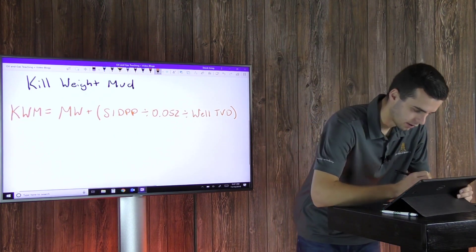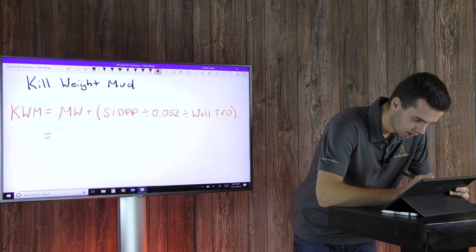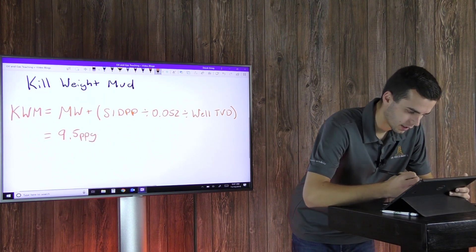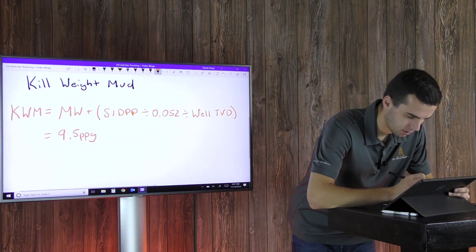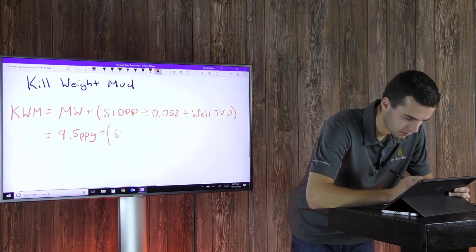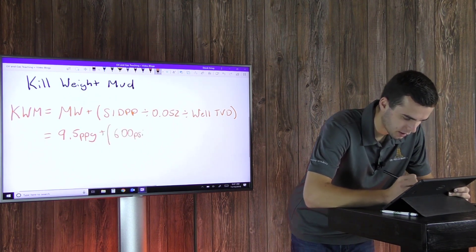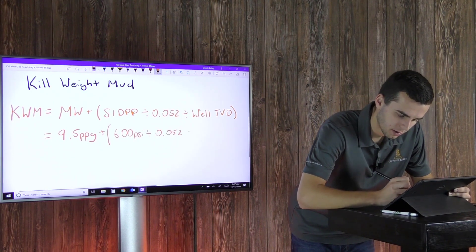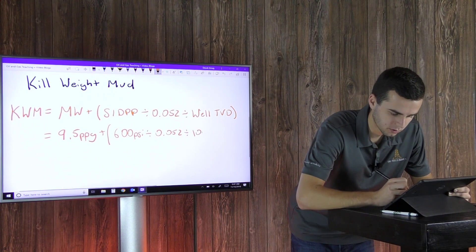So let's go through this calculation. So like I said, we'll be at 9.5, that'll be our ppg, that will be our mud weight. Shut-in drill pipe pressure is 600 psi, divide that by 0.052, and divide that by 10,000 feet, which is our true vertical depth.